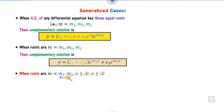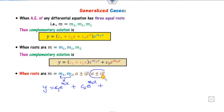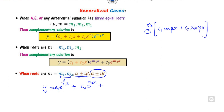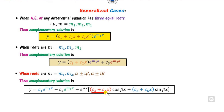If the roots include distinct real roots m1 and m2 as well as repeated complex roots, the solution combines e^(m1·x) and e^(m2·x) terms with the complex root terms. For repeated complex roots alpha ± beta·i, instead of just c1 and c2, you write (c1 + c2·x) for the repeated pair, keeping the cosine and sine parts as usual.